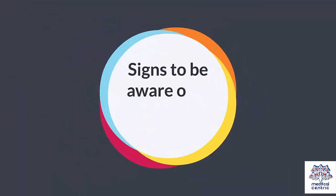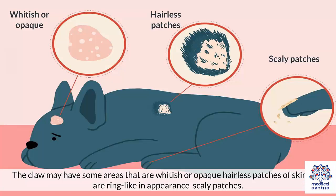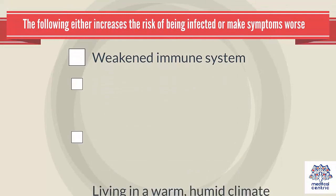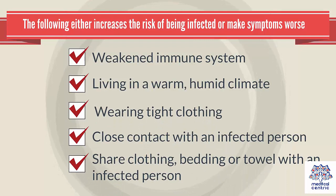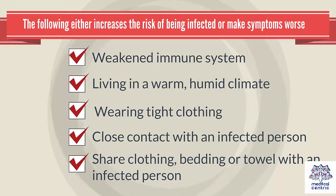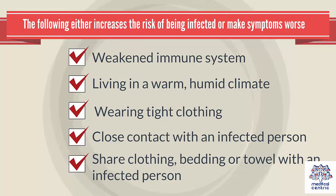Signs to be aware of in pets include claws that may have whitish or opaque areas, hairless patches of skin that are ring-like in appearance, and scaly patches. The following factors either increase the risk of being infected or make symptoms worse: weakened immune system, living in a warm and humid climate, wearing tight clothing, close contact with an infected person, and sharing clothing, bedding, or towels with an infected person.